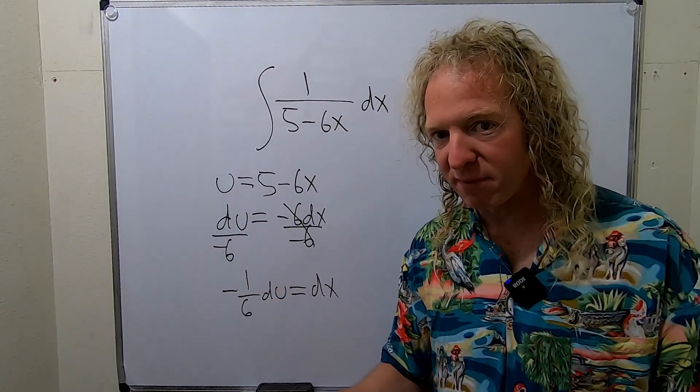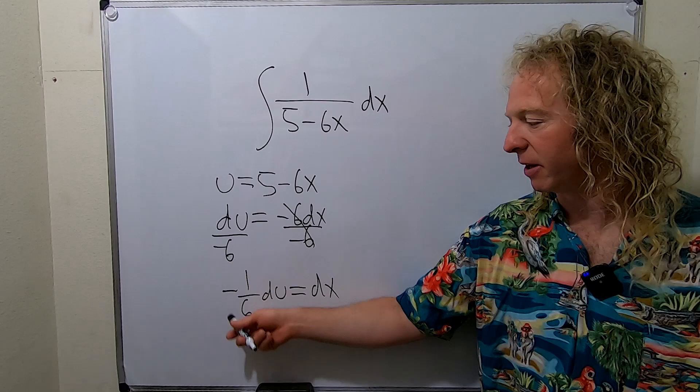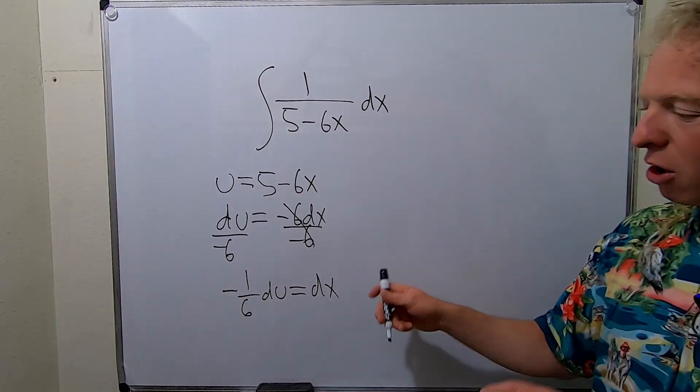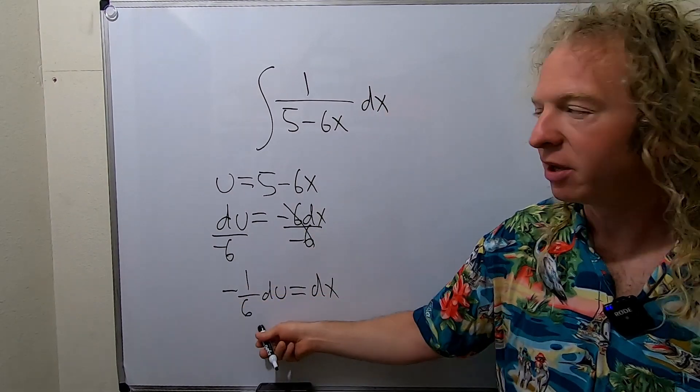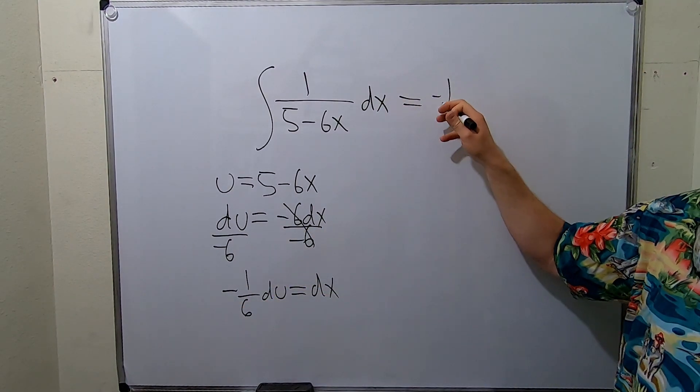All right, good stuff. So now we can make the substitution. So now you'll see what I'm talking about, that foresight, knowing that we typically pull constants out. So dx is going to get replaced with this, so I'll pull out that constant.